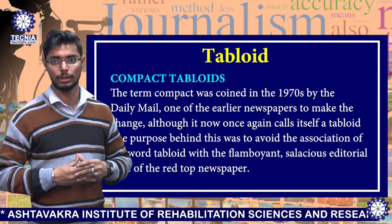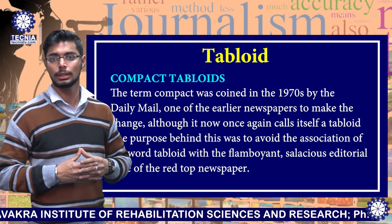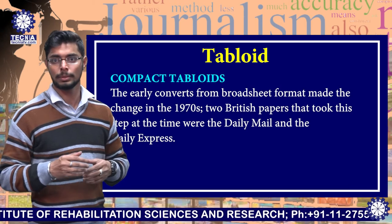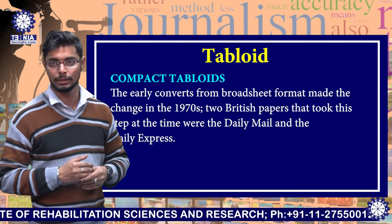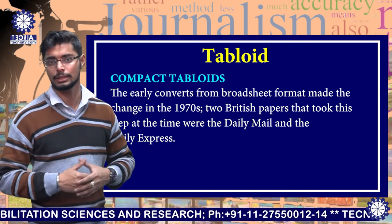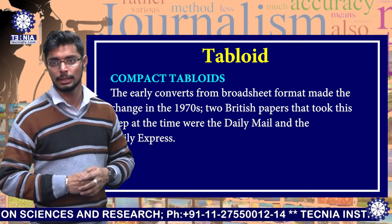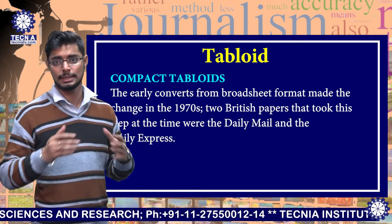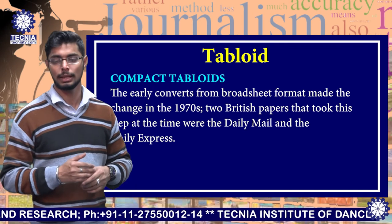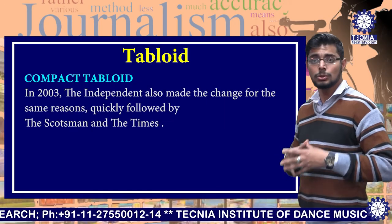The purpose was to avoid the association of the word tabloid with the flamboyant, salacious editorial style of the red top newspaper. The early converts from the broadsheet format made the change in the 1970s; two British papers that took this step were the Daily Mail and Daily Express. In 2003,